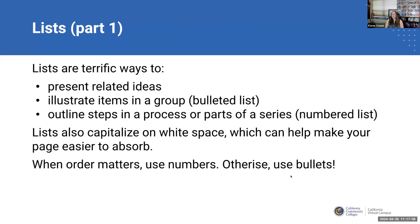Going back to that idea about our brains — neuroscience tells us our brains only have so much space for short-term information before they need time to store it into long-term memory. So we need white space, bullets, and headings that are going to help our students absorb the material more readily. Lists are a great way to create more white space. They present related ideas, illustrate items in a group, or outline steps in a process.